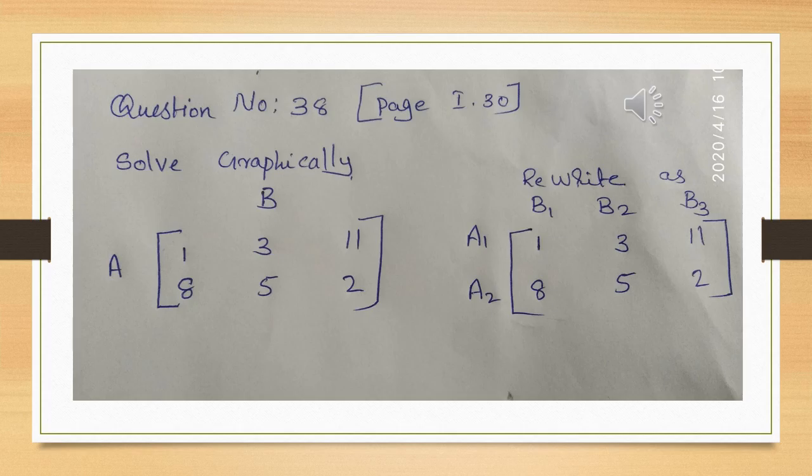We are going to rewrite the payoff matrix. We have two players: the minimizing player with strategies A1 and A2, and the maximizing player with strategies B1, B2, and B3. Then we are going to apply the probability method to this setup.